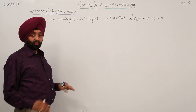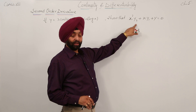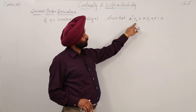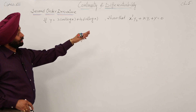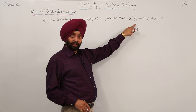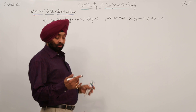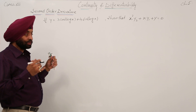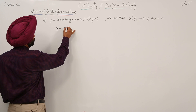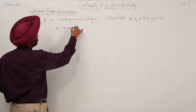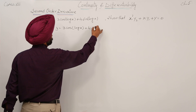This question is now again in a slightly different form. What they have written is x square y2 in the base, which means double derivative, while this is single derivative. Now again we have to show that x square double derivative of y plus x single derivative of y plus y is equal to 0. So let's do this question in a different way. We are having y is equal to 3 cos log x plus 4 sin log x.